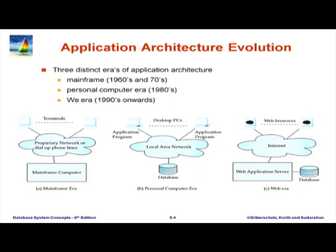This network was not a general purpose network - its sole goal was to allow people to connect to this mainframe computer. It was closed; only those who had been given terminals as part of the application could access it. But it was actually a network. The only difference is that the whole network was geared towards feeding data to the mainframe and getting data back from terminals. This era had huge growth for many applications, beyond just airline and railway booking to many other things.